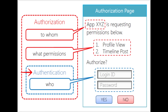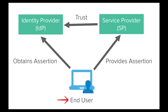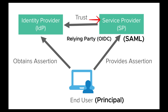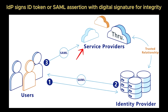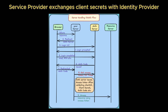In both SAML and OIDC, there are three main parties involved. The first is the user or principal — the person trying to access a resource. Second, there's the service provider in SAML or the relying party in OIDC — the application the user is trying to access. Third is the identity provider, the trusted authority that authenticates the user and issues an assertion in SAML or a token in OIDC. The service provider or relying party trusts the identity provider because they have exchanged metadata — for example, certificates, endpoints, and keys — ahead of time. The identity provider signs the assertion or token so that the service provider or relying party can verify it was not forged or altered.